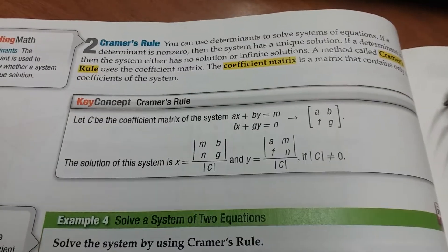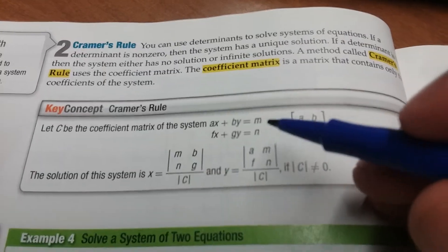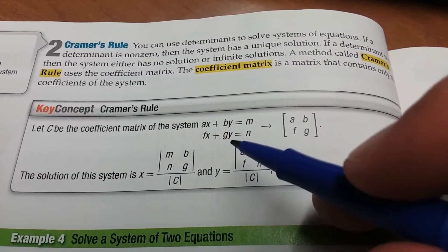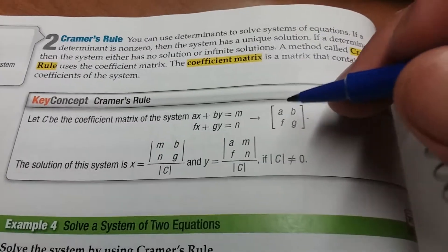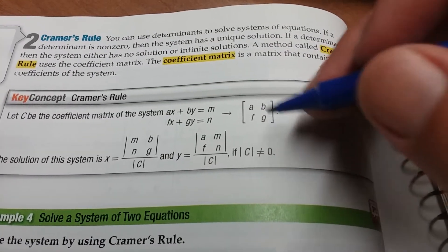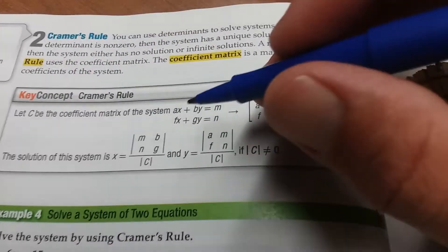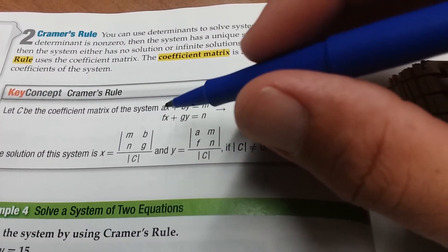Let's see the coefficient matrix of the system. Ax plus By equals m. Fx plus Gy equals n. Okay, so you get the coefficient matrix is using the coefficients of x and y.